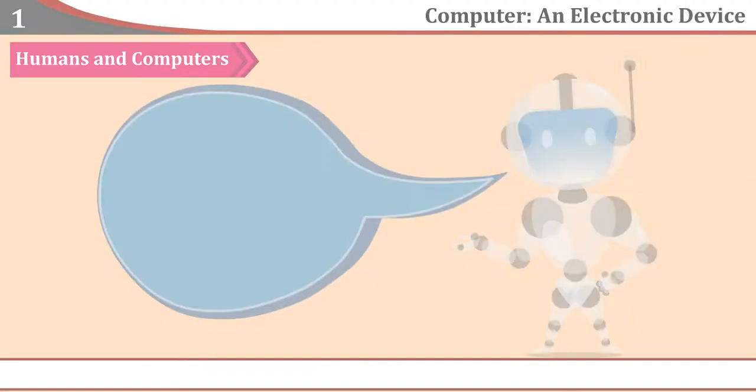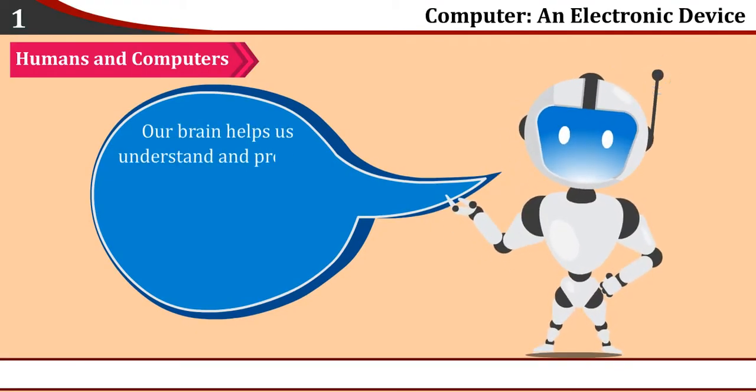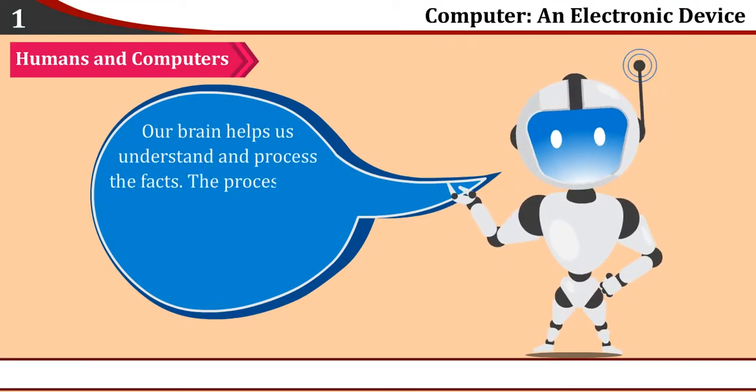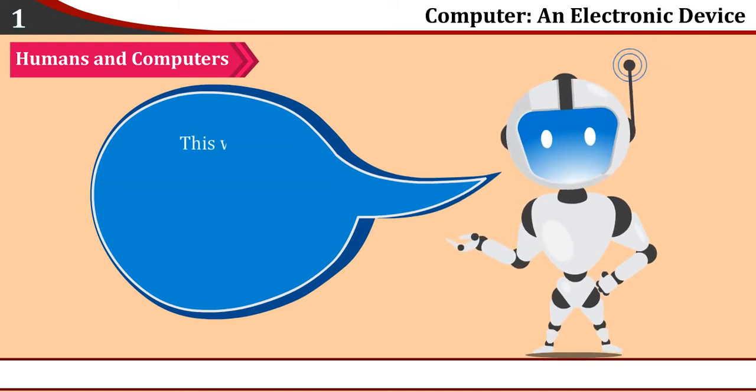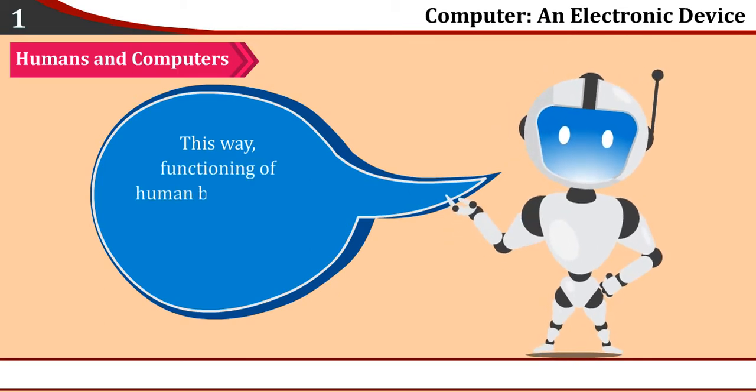Our brain helps us understand and process the facts. The processor of the computer controls other devices and processes the data. This way, functioning of human body closely resembles that of computers.